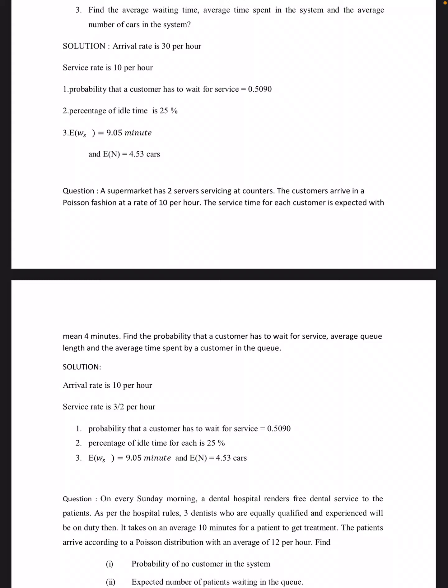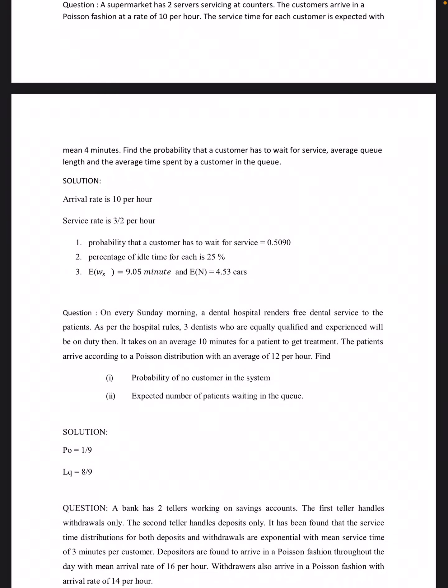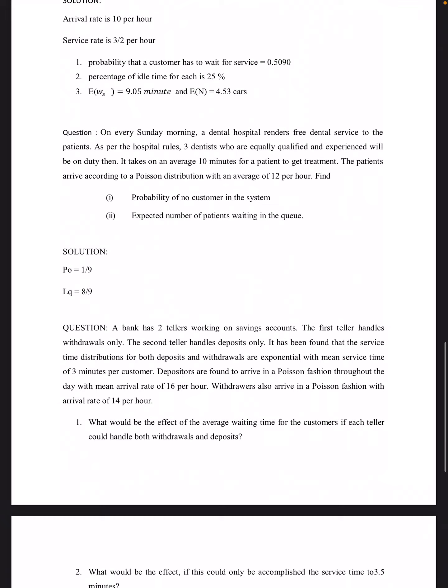Problem 2: A supermarket has two servers serving at counters. Customers arrive in Poisson fashion at a rate of 10 per hour, and service time for each customer is exponential with mean four minutes. Find the probability that a customer has to wait, the average queue length, and the average time spent in the queue. The arrival rate is 10, service rate is 3/2 per minute, and the answers are: probability of waiting = 0.5090, idle percentage = 25%, E[W] = 9.05, and E[N] = 4.53.